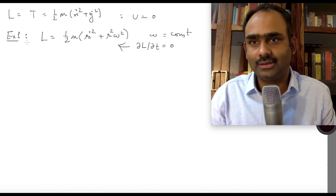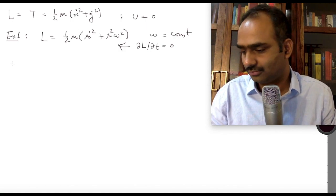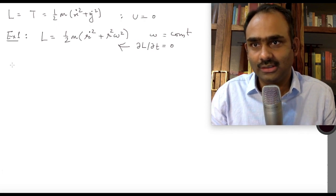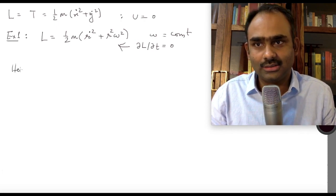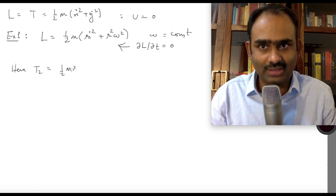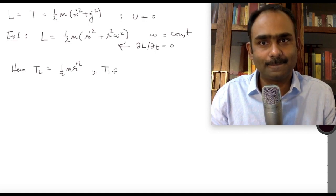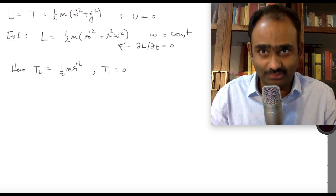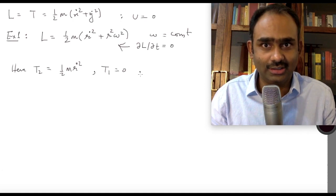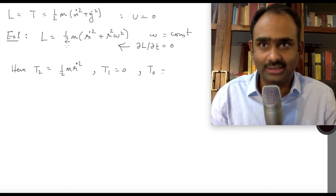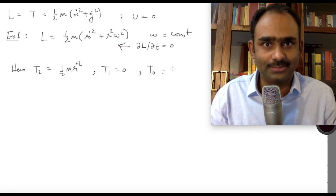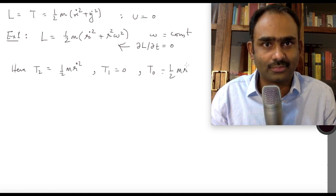So ∂L/∂t = 0. Here, T2 = ½mṙ², T1 = 0 because there is no term linear in generalized velocities, and T0 = ½mr²ω².